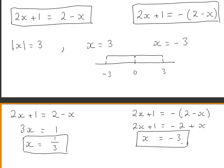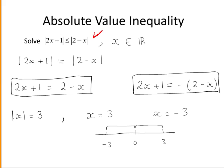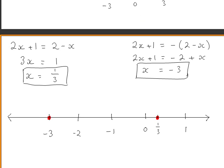These are the only values where the two sides are equal to each other. For any other values they are unequal. Representing this on the number line, we have x equals minus 3 and x equals one third, which divides the line into three segments: from minus infinity to minus 3, from minus 3 to one third, and from one third to infinity.